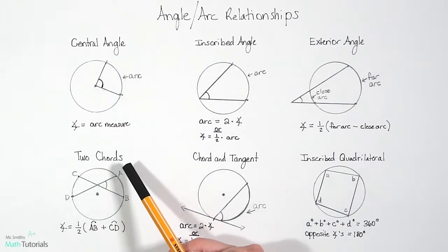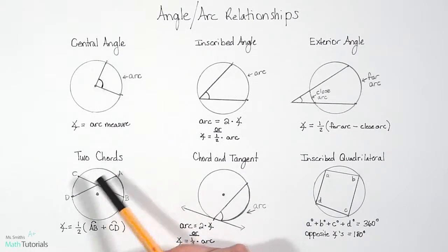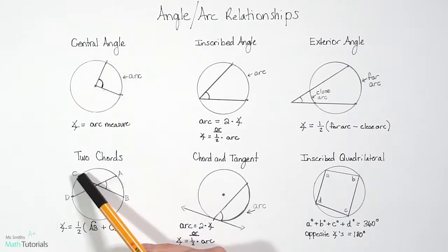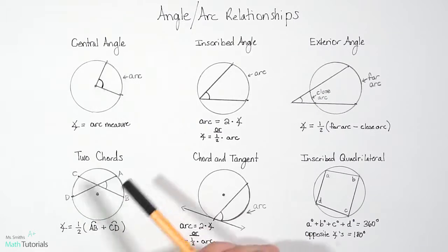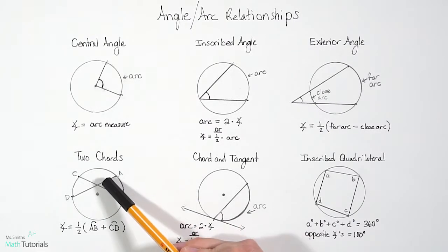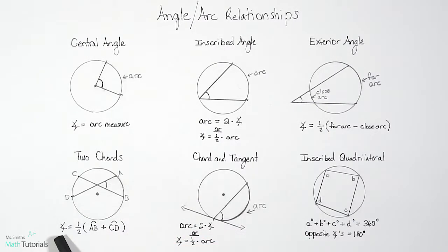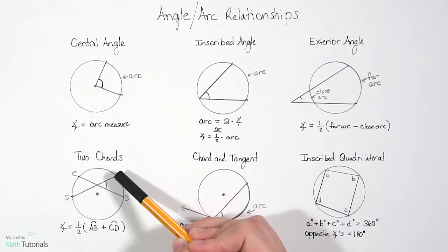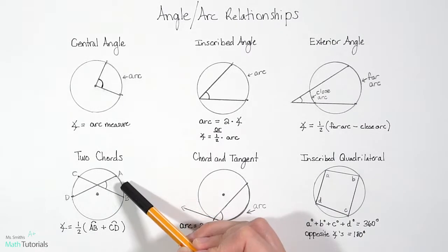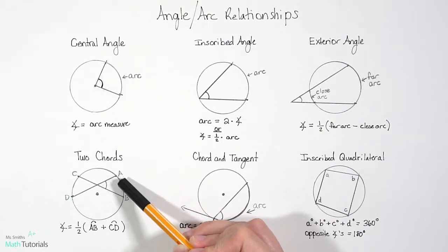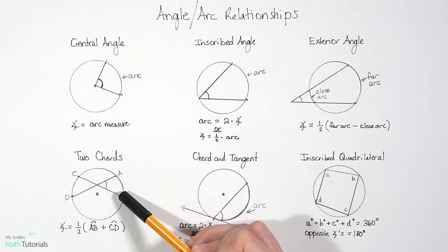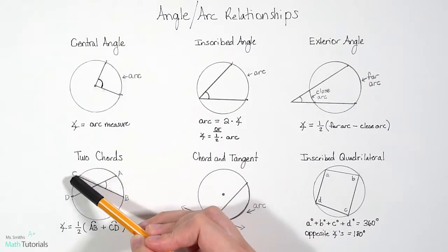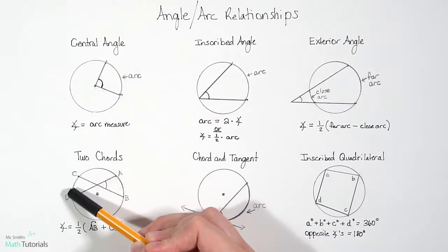The next one is two chords. With two chords, we can find the angle measure by multiplying one half times the arc measure of AB plus the arc measure of CD.